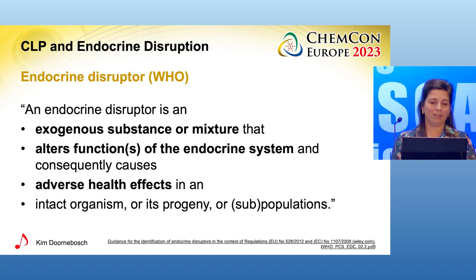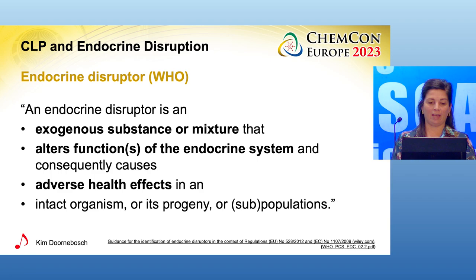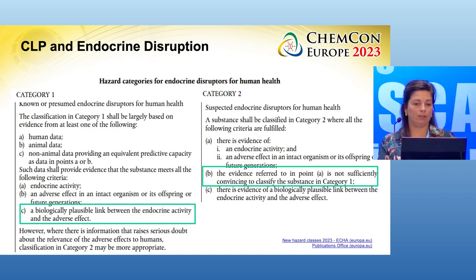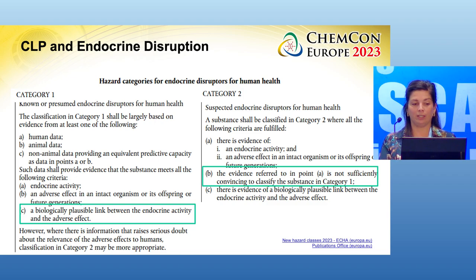An endocrine disruptor, according to the WHO, is an exogenous substance or mixture that alters the function of the endocrine system and consequently causes adverse health effects in an intact organism or its offspring. These are the hazard categories included in CLP, and they specify which types of data we would need to assess to come to a conclusion on whether a substance is an endocrine disruptor or not.